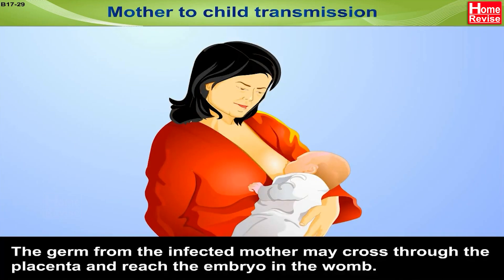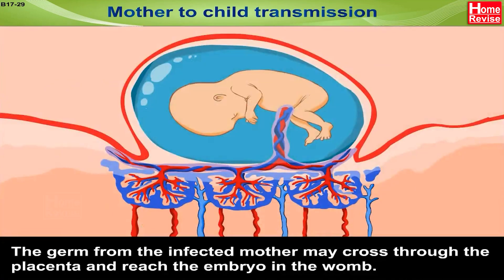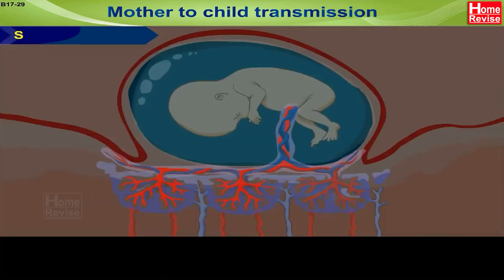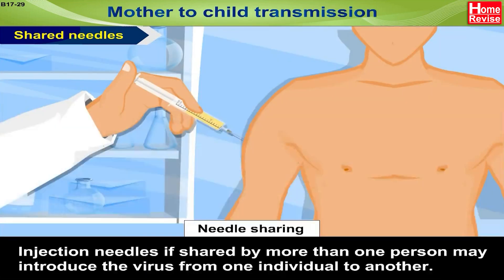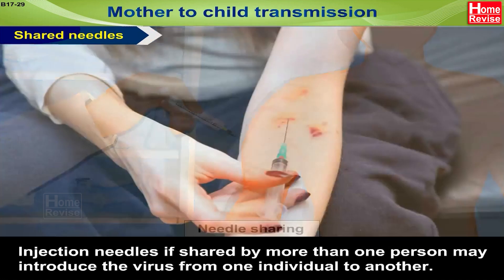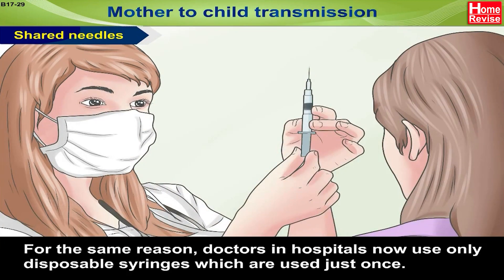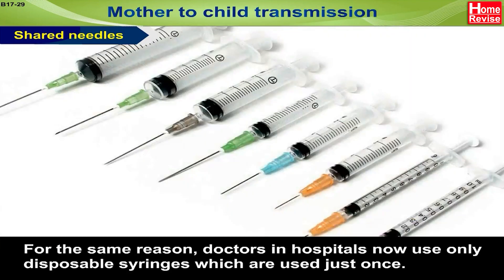Mother-to-child transmission: the germ from an infected mother may cross through the placenta and reach the embryo in the womb. Shared needles: injection needles shared by more than one person may introduce the virus from one individual to another; the disease is quite common in drug abusers. For this reason, doctors in hospitals now use only disposable syringes, which are used just once.